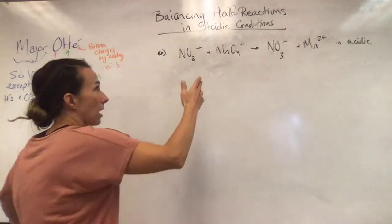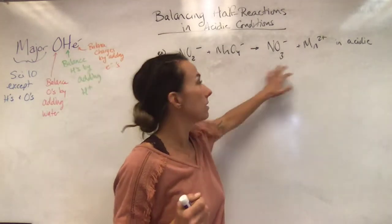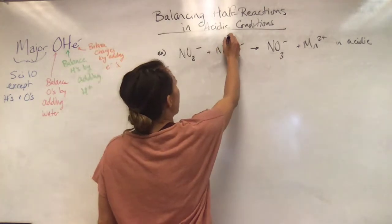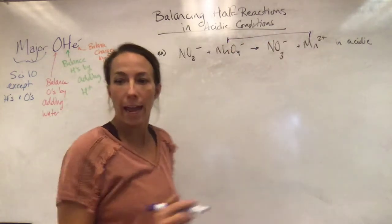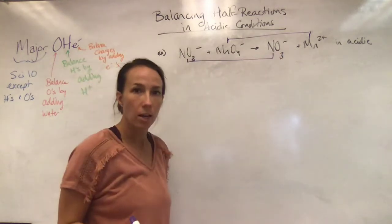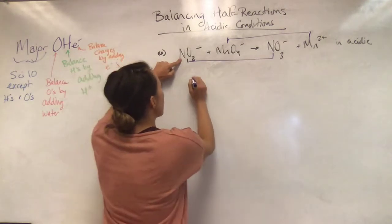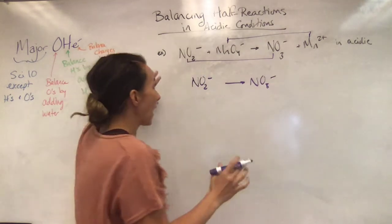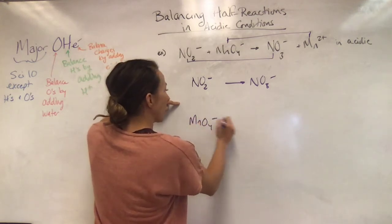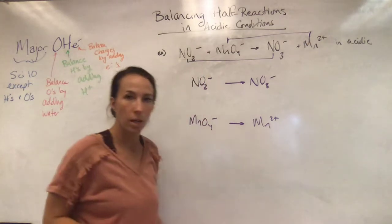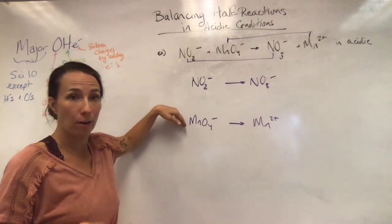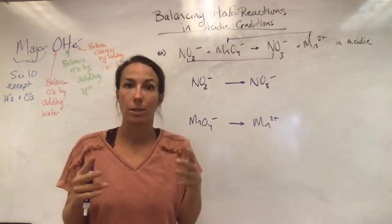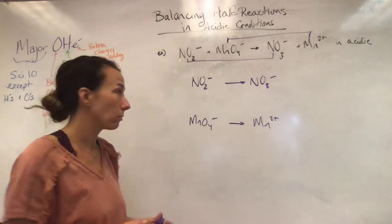So I have this skeletal reaction. I know these two are my main reactants and these two are my main products. I pick out that this species must have become this one, and this species must have become that one. I treat them separately. So the first one: NO2⁻ became NO3⁻. And the second: MnO4⁻ became Mn2+. One will be reduction, the other will be oxidation. If you end up with both being oxidation, you've done something wrong — go back and fix it.